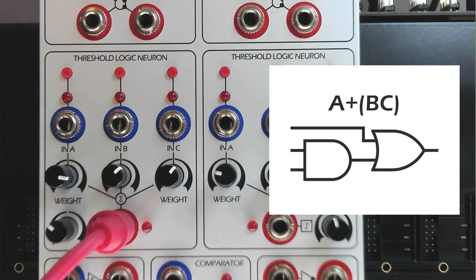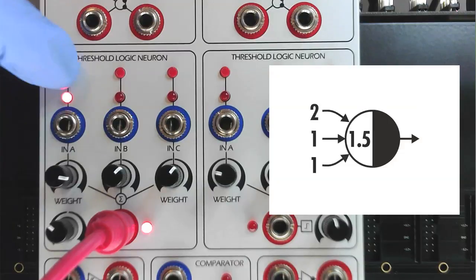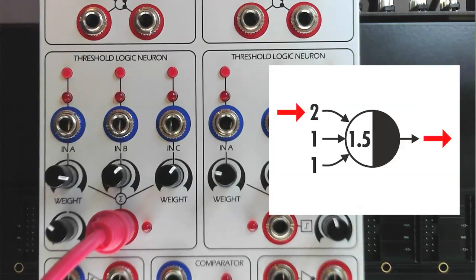With the controls set as illustrated, our neuron model would look like this. A pulse to the A input with a weight of 2 would overcome the activation threshold of 1.5, and we would have a pulse at the output, making the statement true.